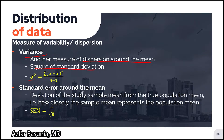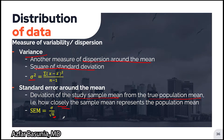The standard error around the mean is the deviation of the study sample mean from the true population mean — that is, how closely the sample mean represents the population mean. It is calculated by taking the standard deviation and dividing it by the square root of the sample size n. Thus, the smaller the standard error of the mean, the more closely the sample mean approximates the true population mean.